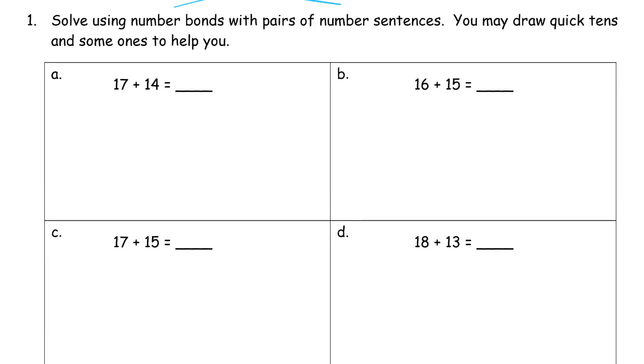So 17 plus 14. And there's lots of different strategies to use for number bonds. You can add the ones first, you can add the tens first, or you can make ten. There's a lot of different ways to use the number bonds. But no matter how you use them, you're going to end up using two number sentences, no matter what method you use for the number bonds.